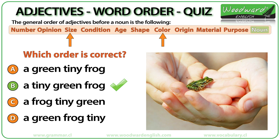A tiny green frog. Tiny refers to size, green is a color, and size comes before color.